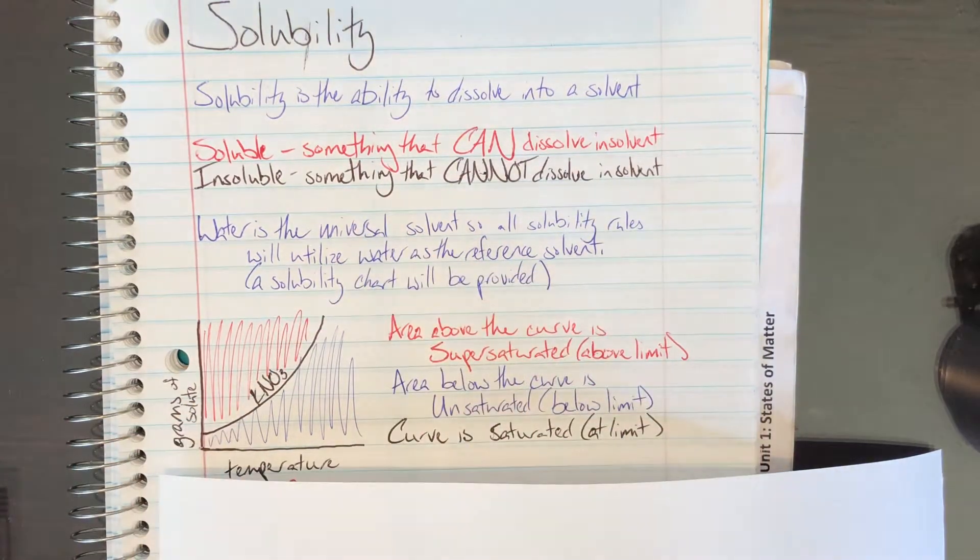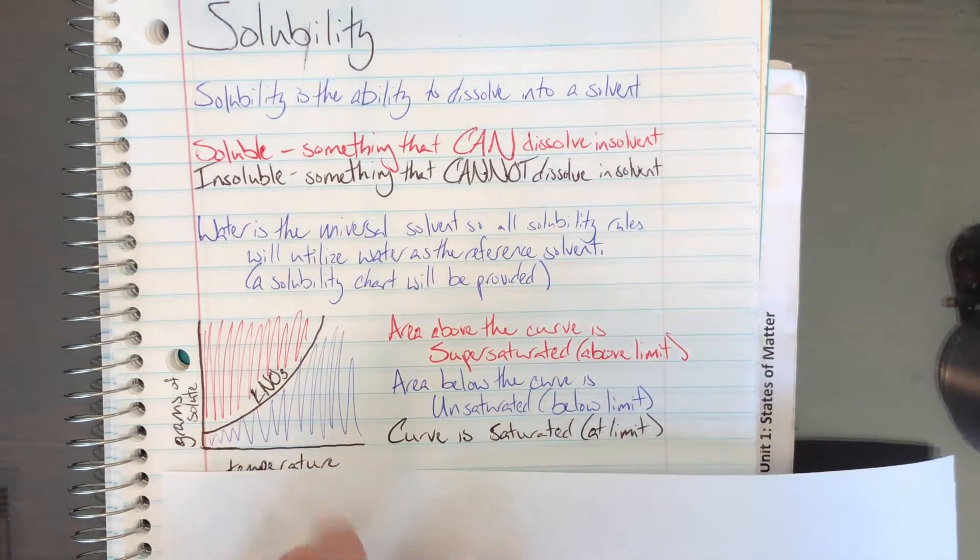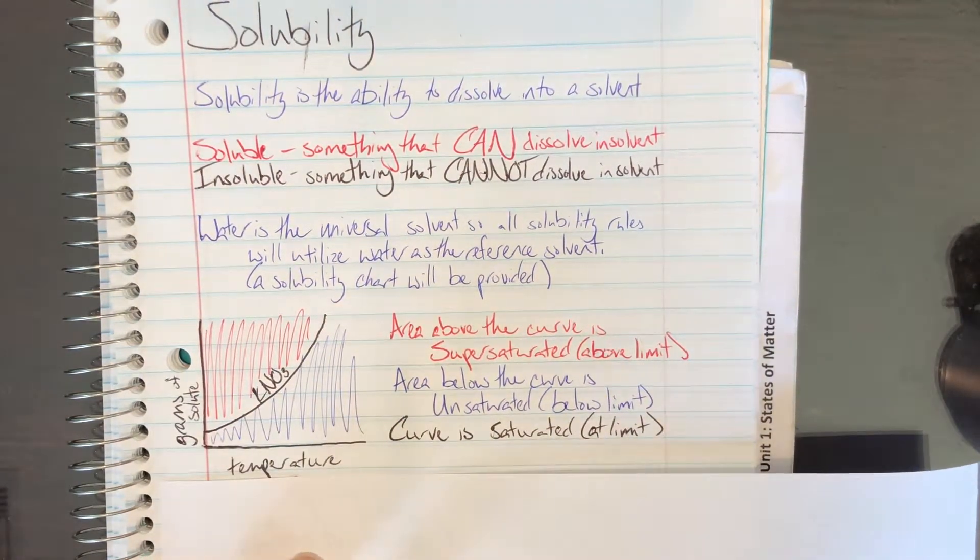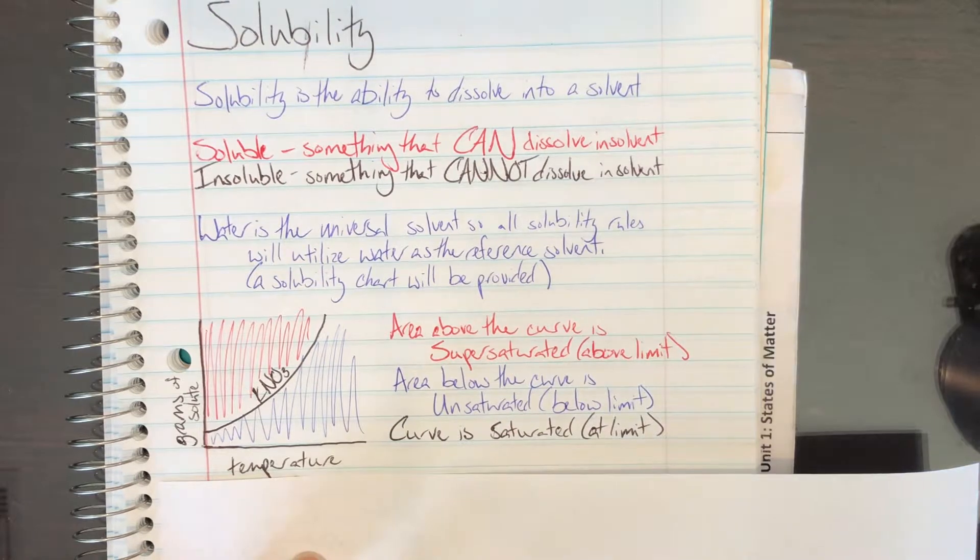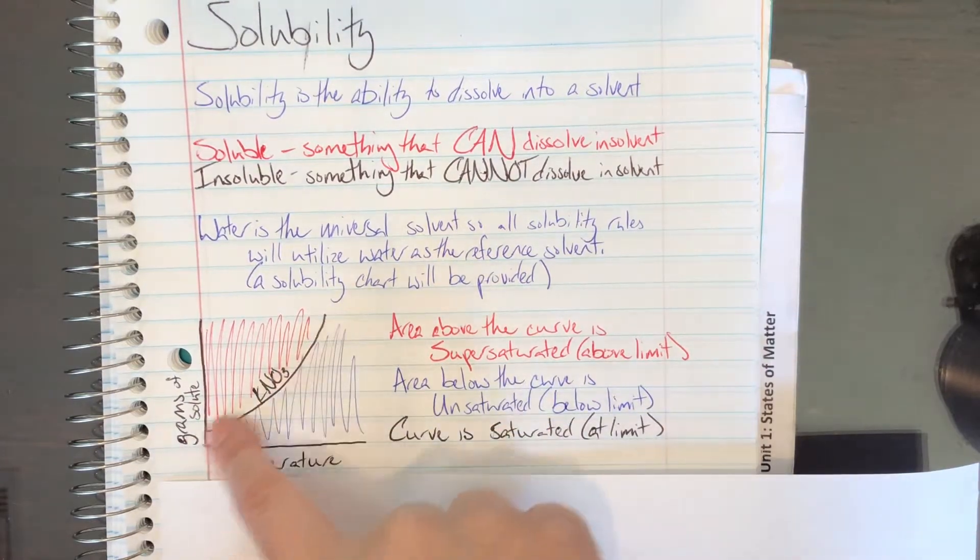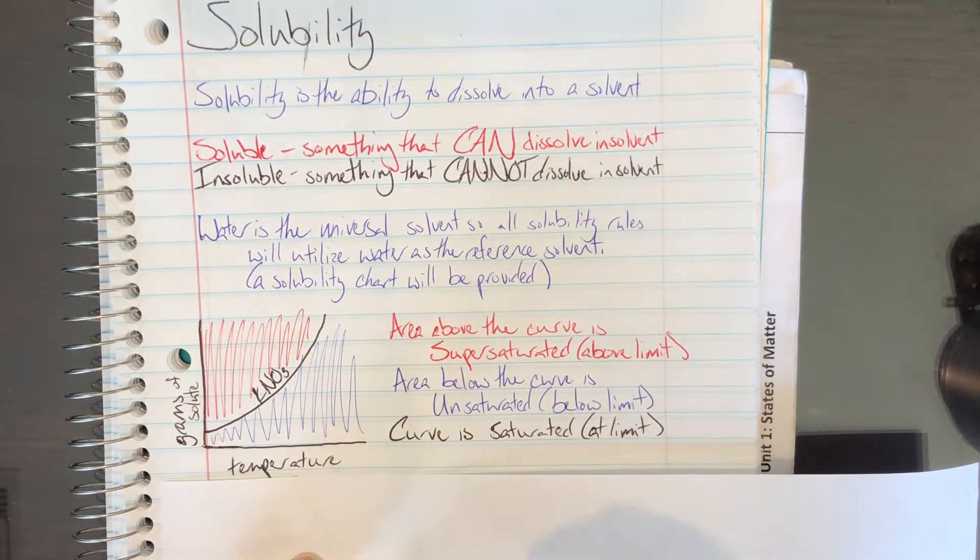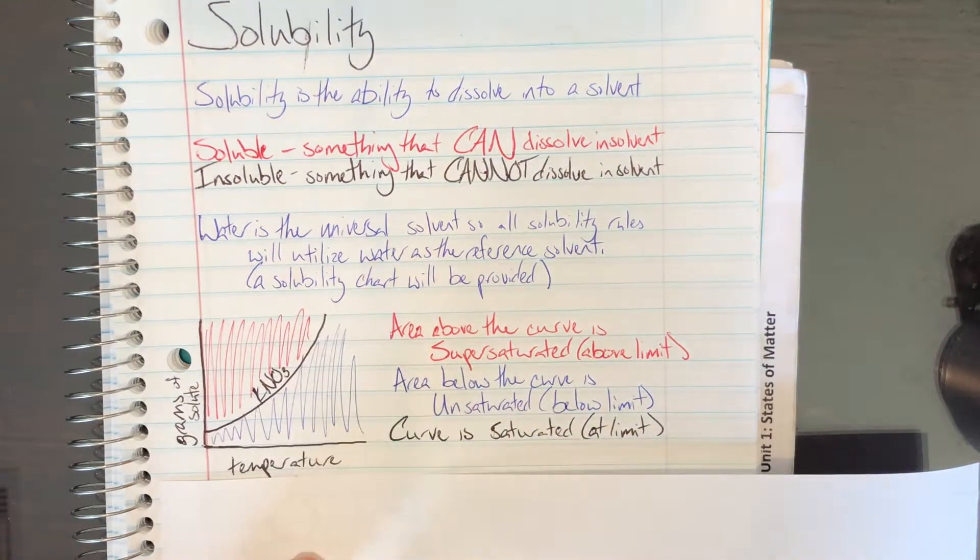Anything below the curve is unsaturated. Any amount below the max is unsaturated. This line is our saturated line. That's the normal limit at that temperature, what is normally expected to be possible to dissolve. So, anything above is supersaturated, anything below is unsaturated, and on the line is saturated.